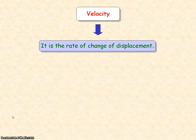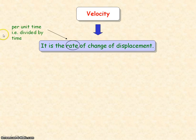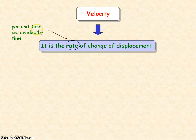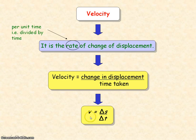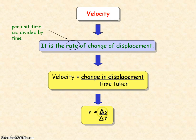Velocity is defined as the rate of change of displacement. A rate means dividing by time, or per unit time. So we can say velocity is the change of displacement per unit time, or the change in displacement divided by time taken. We express this as V = ΔS / Δt, where V is velocity, Δ (delta) represents a change, S is the symbol for displacement (not speed), and Δt is the change in time.